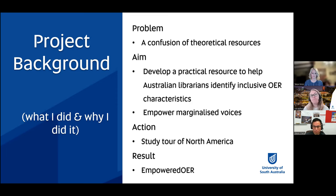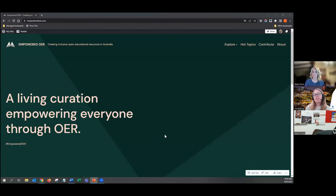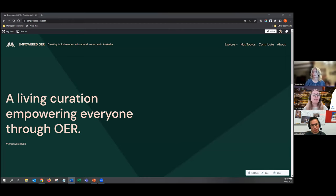Here is the QR code and the website link — it's EmpoweredOER.com. If you would like to go there and have a look around while I'm also going to show it, you're more than welcome. This is the live site. And why is it green? Well, I like green. Darker background colours tend to be kinder on the eyes, and green kind of seems synonymous with concepts of growth and creativity, which is what the site will engage with.